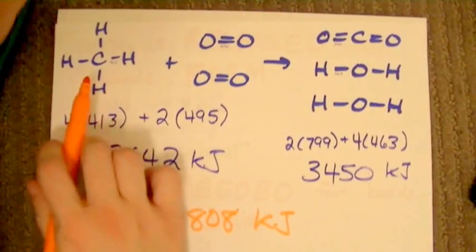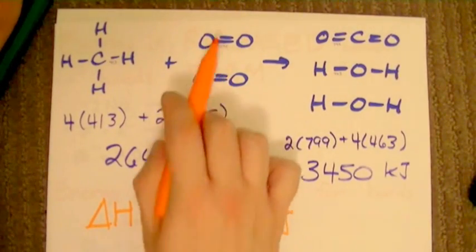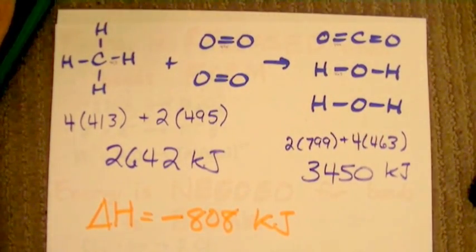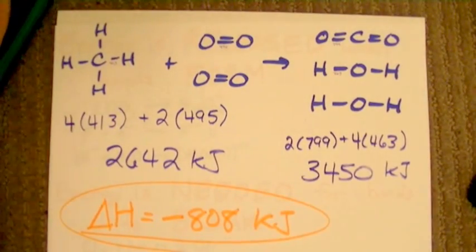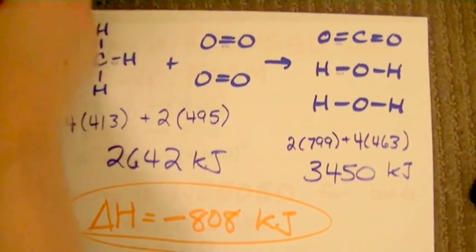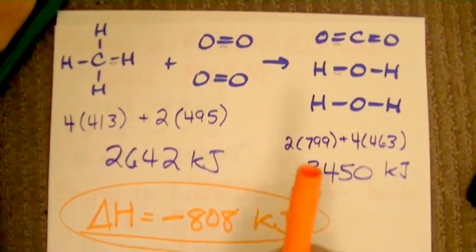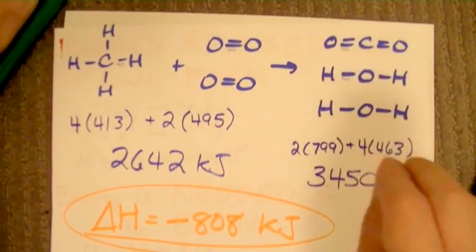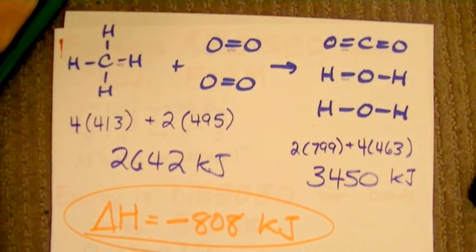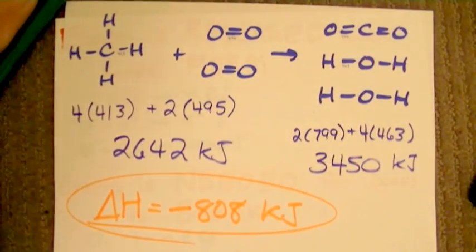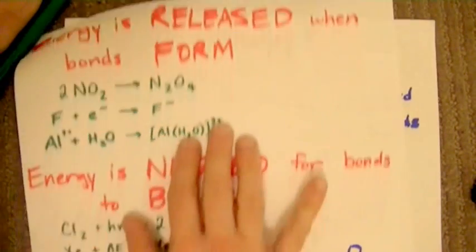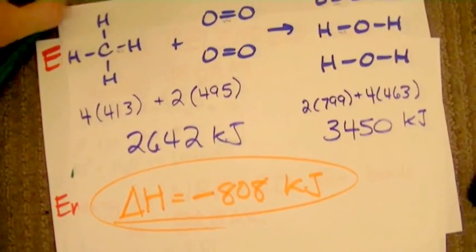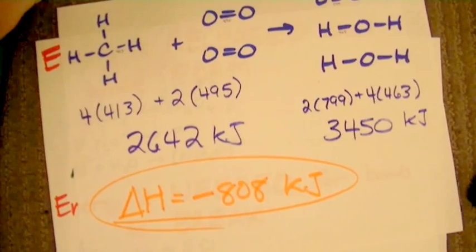So for every mole of methane burned with two moles of oxygen, producing one mole of carbon dioxide and two moles of water, we release 808 kilojoules of energy. Hopefully this has helped elucidate that energy needs to be put in to break bonds on the reactant side, and energy is released when you form bonds on the product side. That's the qualitative and quantitative way to understand enthalpy, and for the rest of the thermodynamics course, I wish you only the best of luck.